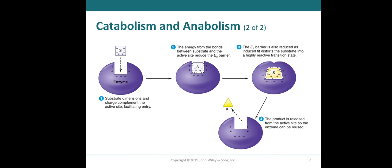Having a catalyst lowers the activation energy. Since the activation energy barrier is reduced, it distorts the substrate into a highly reactive transition state. The binding of the substrate to the enzyme allows the substrate to be oriented in such a way that it can easily be converted to its product form. The product is then released. Once the substrate has reacted to its product, it is now released from the active site of the enzyme.